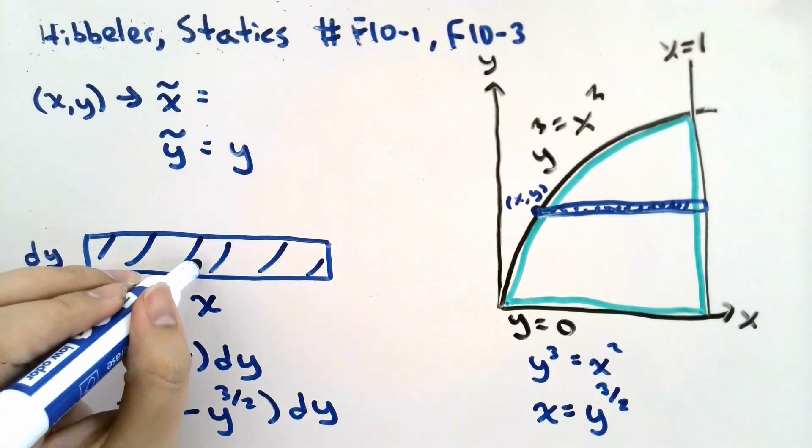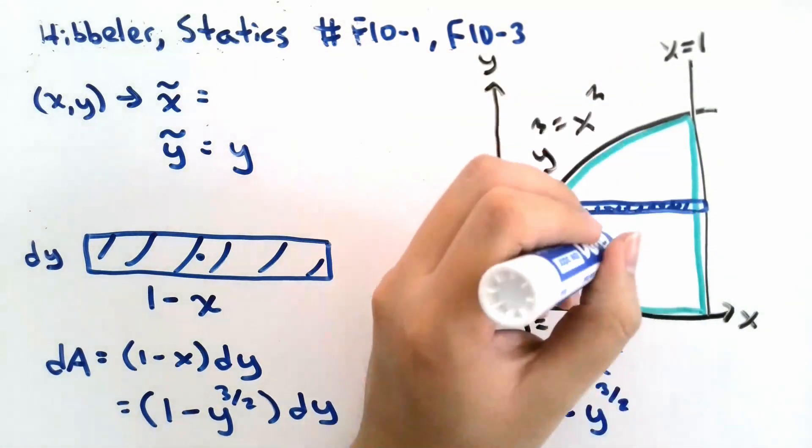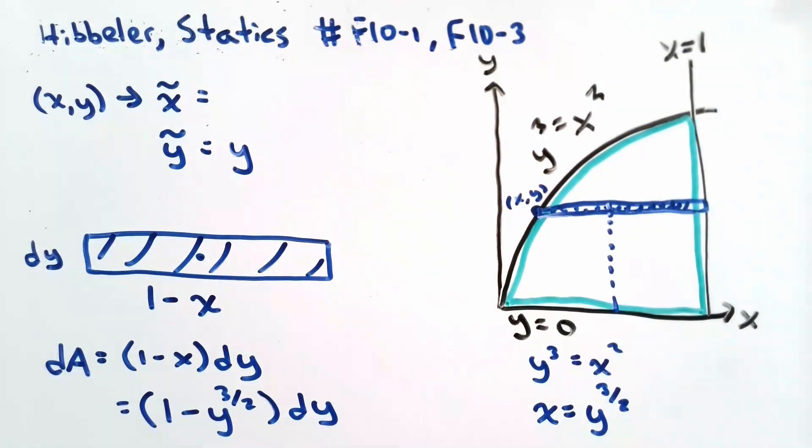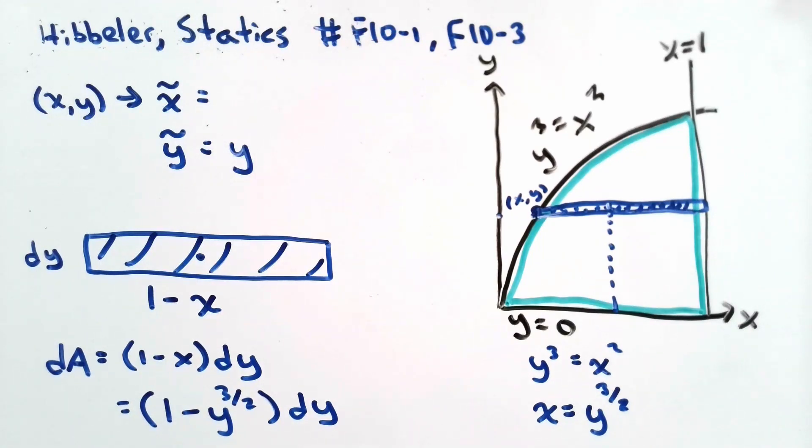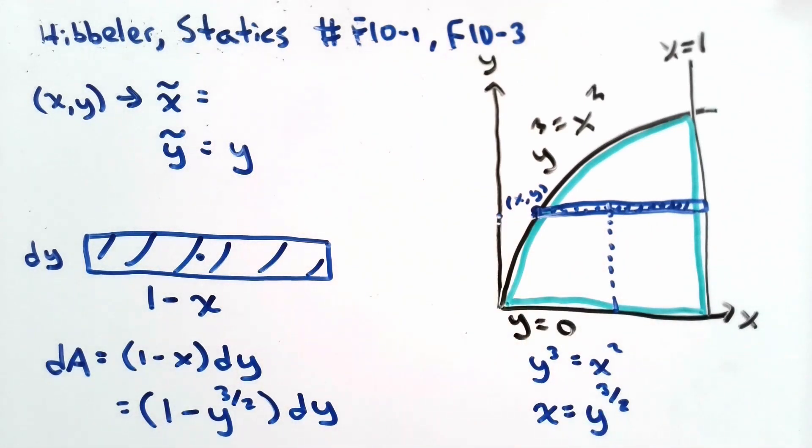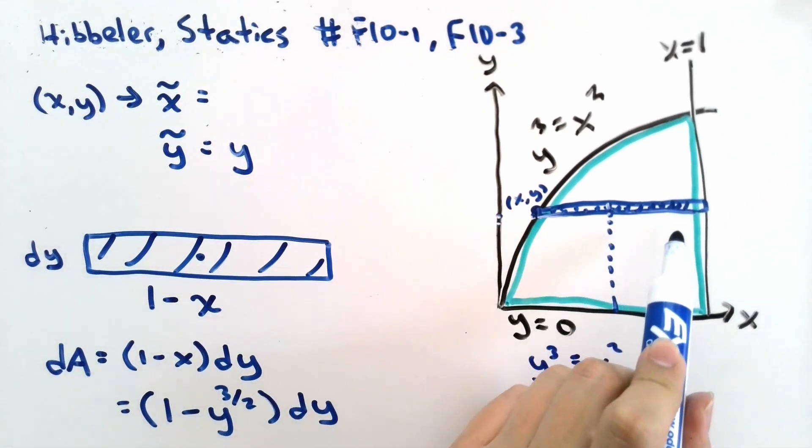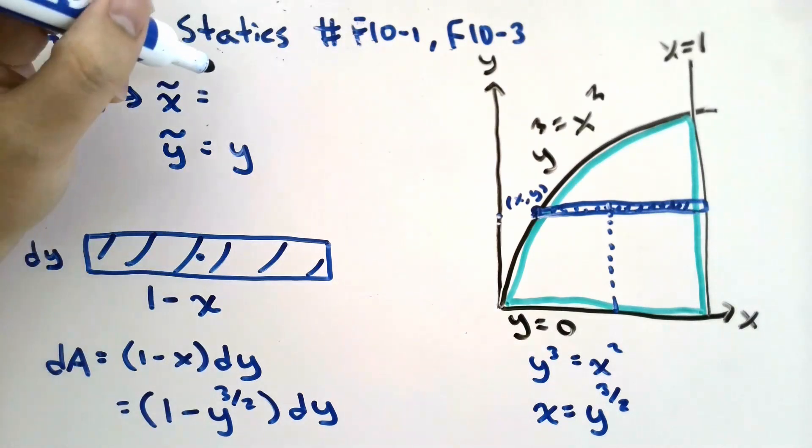However, the centroid for the x coordinate is located at the center of this rectangle, which means that the location will be somewhere about here in the figure. We know that this entire length is 1 minus x, because this length from the y-axis to this point is simply x. The length from the y-axis to the centroid of this rectangle should be equal to 1 minus half of 1 minus x, or simply 1 minus x over 2.